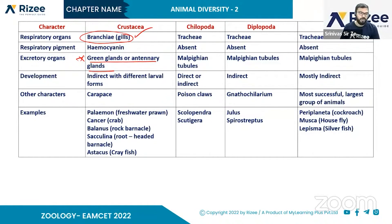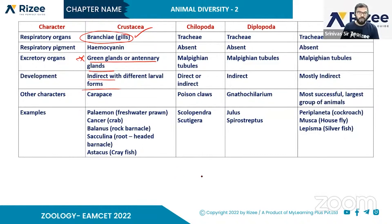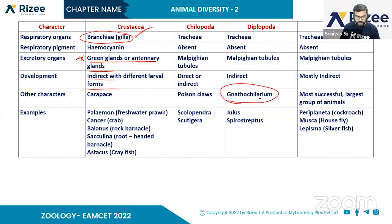Development is also very important. In Crustacea, development is indirect with different larval forms. In Chilopoda, development can be direct or indirect — both are present. In Diplopoda, development details are also noted.